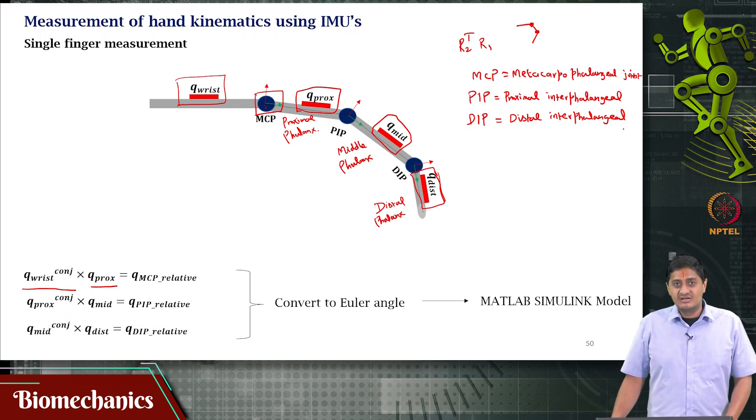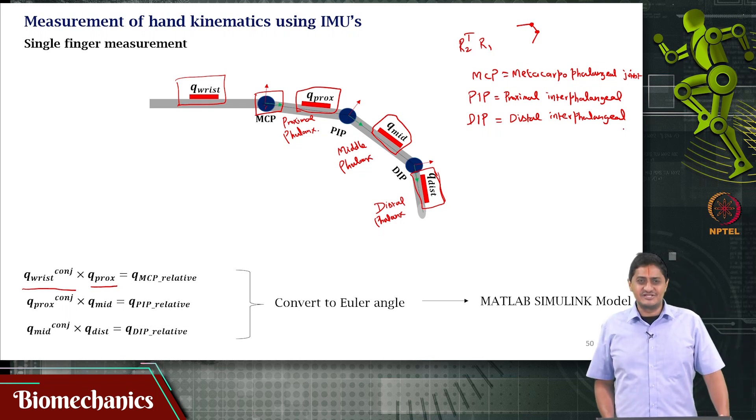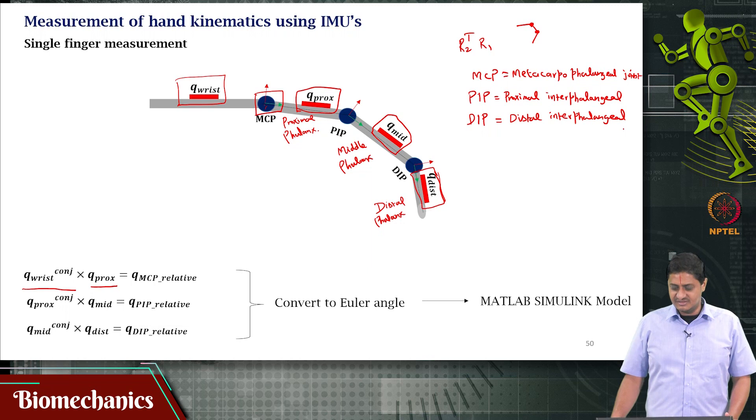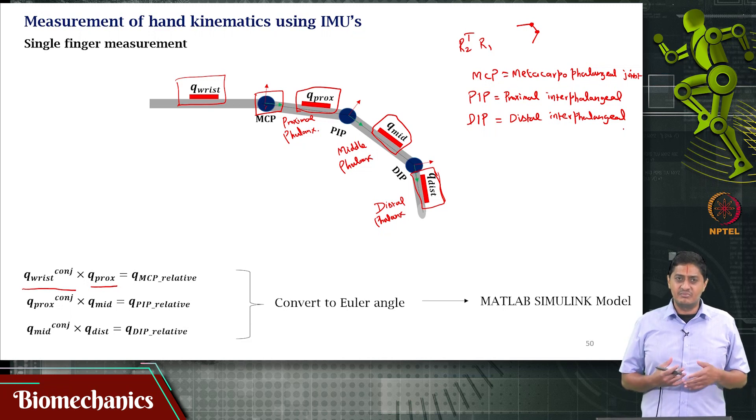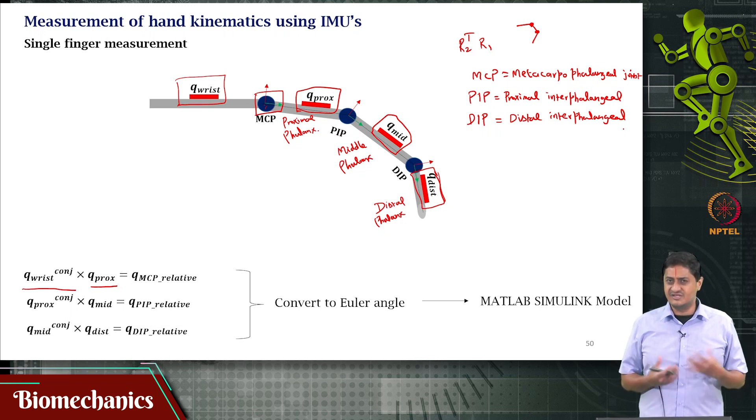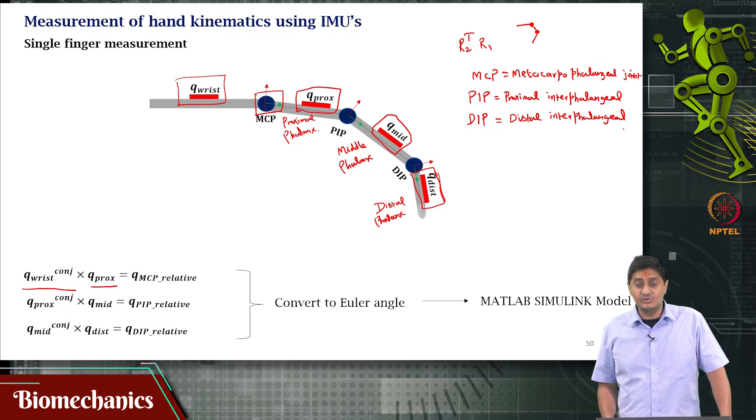In our lab, we use this language where we say DIP joint, PIP joint. The one that is proximal is called the proximal interphalangeal joint or PIP joint. The other is called the distal interphalangeal joint or DIP joint. DIP is the distal interphalangeal joint, PIP is the proximal interphalangeal joint. The more proximal joint is the MCP joint or metacarpophalangeal joint. All these were discussed while we discussed hand biomechanics and anatomy quite some time ago, perhaps 8 weeks or even 9-10 weeks ago.